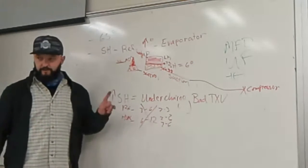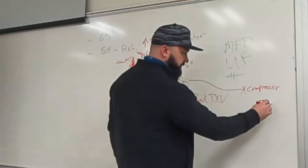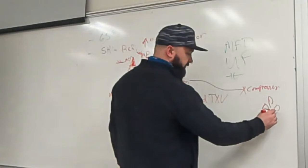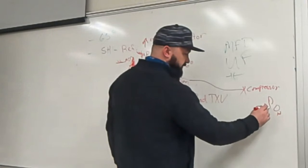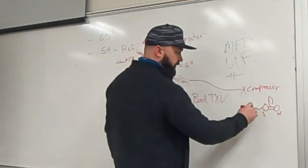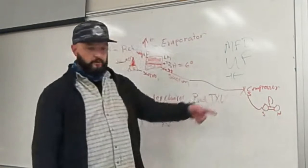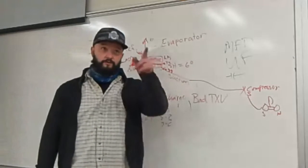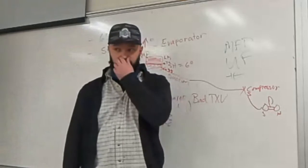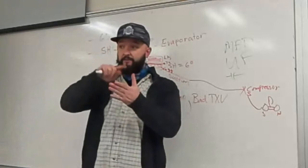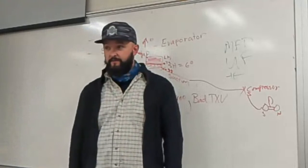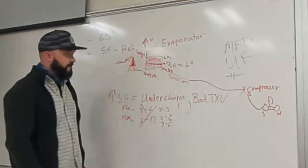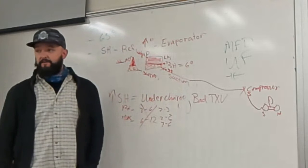Before I erase this — you've got your manifold here with your suction gauge and your head pressure gauge. When you hook up to your suction line you're going to read a pressure. You're going to convert that pressure using a PT chart to a saturation temperature. The gauge will tell you what that temperature is — that's telling you the saturation temperature in your coil when the refrigerant starts changing to a gas.